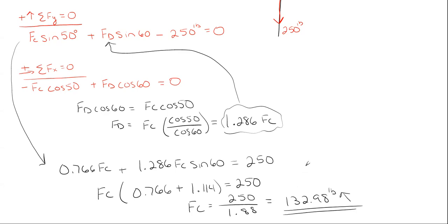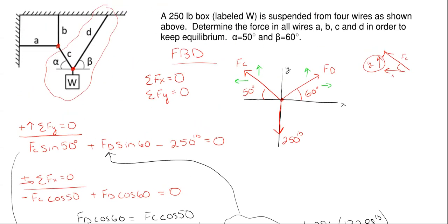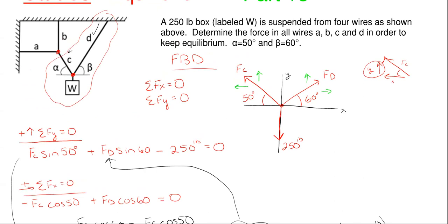So there's one of my cable forces. Well, I can find my other cable force FD just by taking this answer and plugging it into my equation that I had for FD right here, because FD is just simply 1.286 times FC, which is 132.98 pounds. And that gives me an FD value of 171.01 pounds up and to the right. And just keep in mind, as we're going through here, your answers are going to be different based upon how you rounded here. So we found FC and we found FD. So we have two of our four answers.